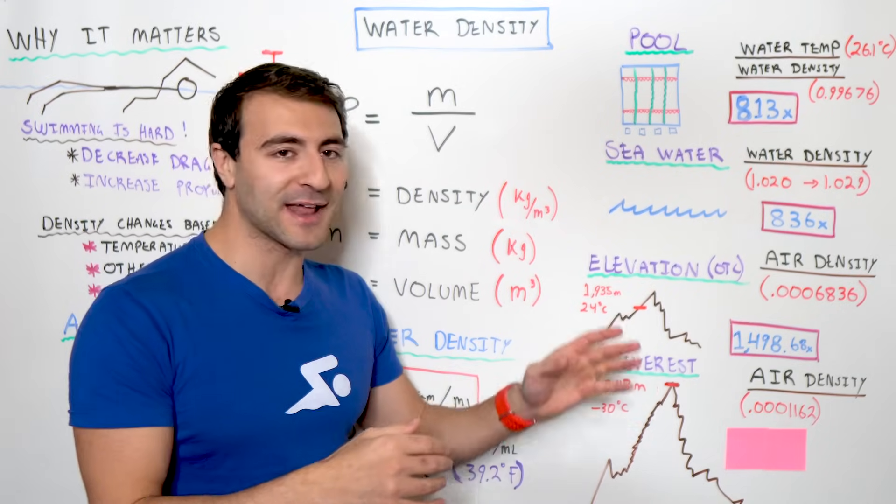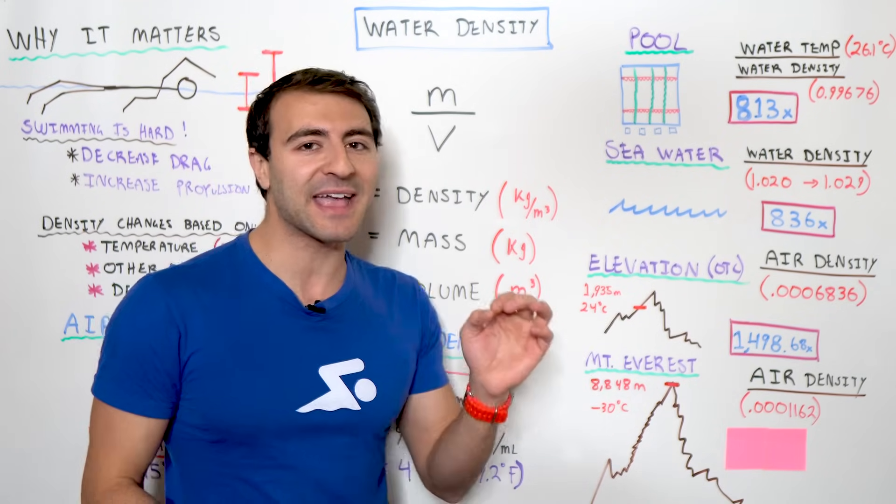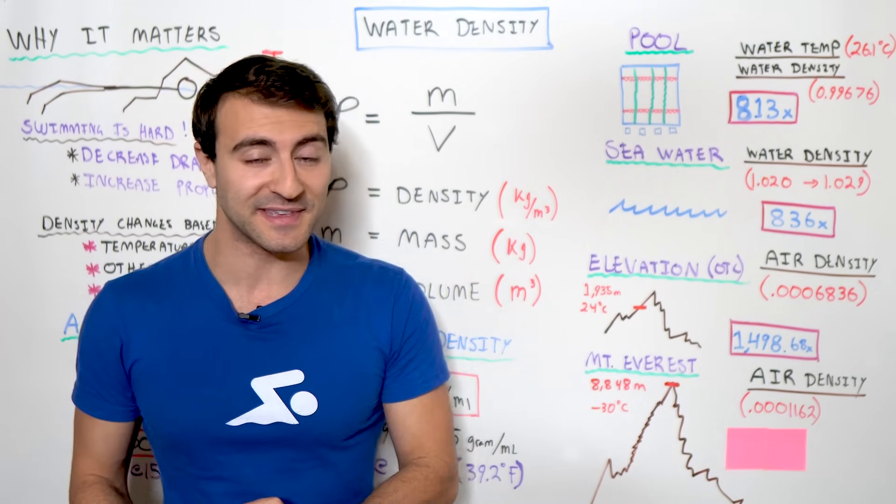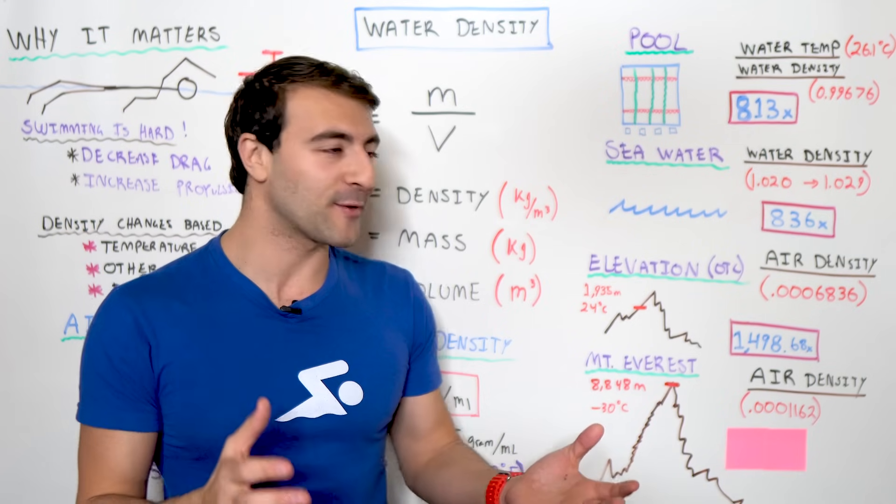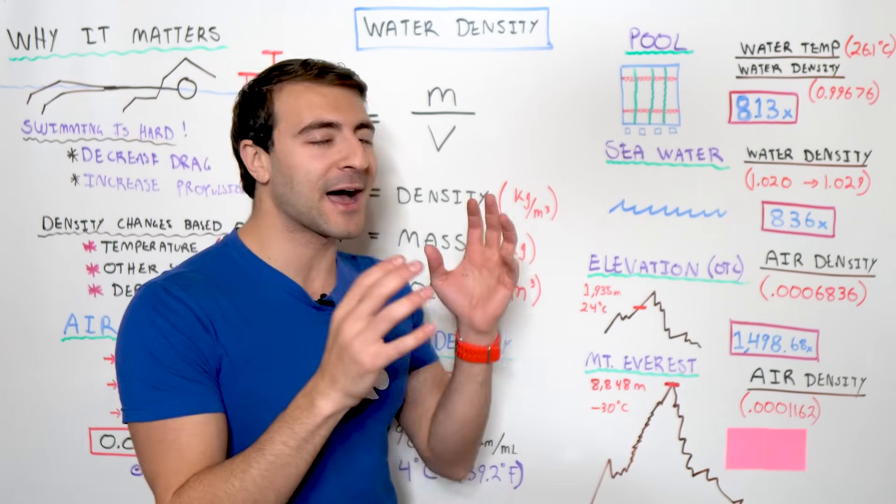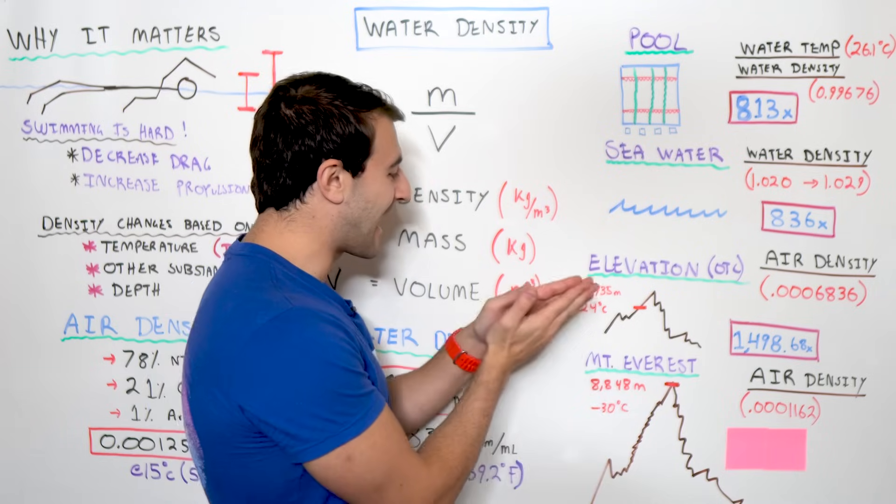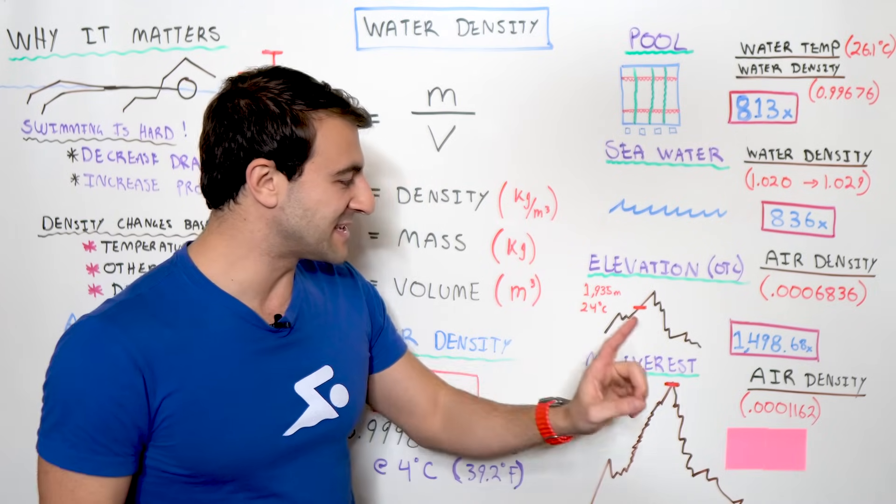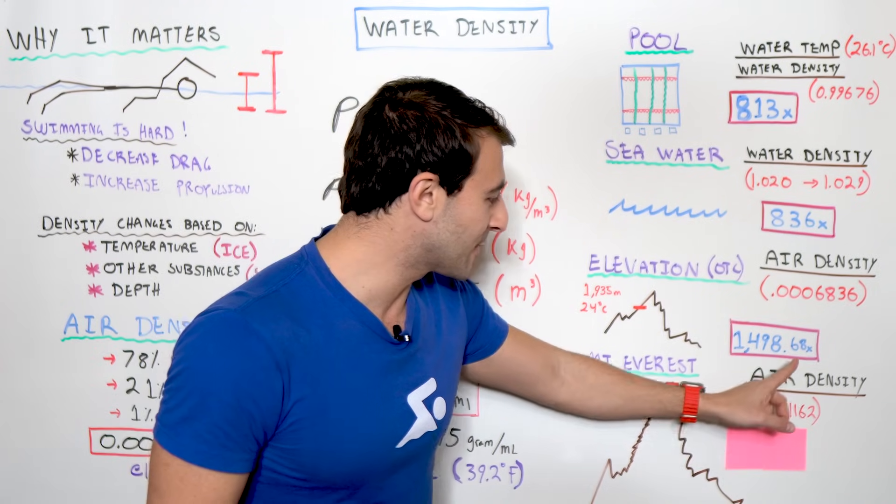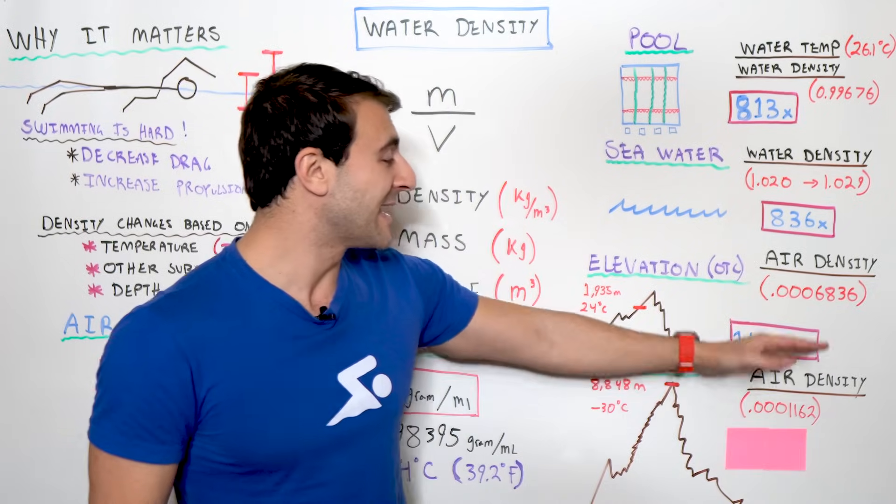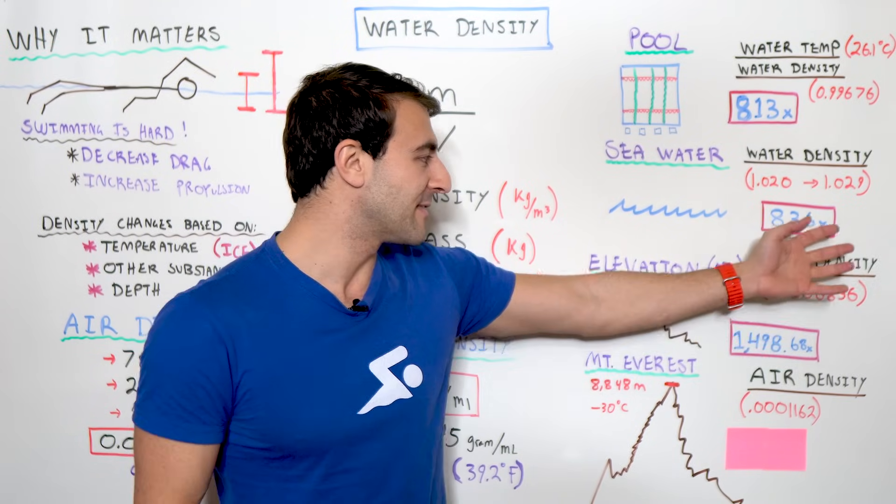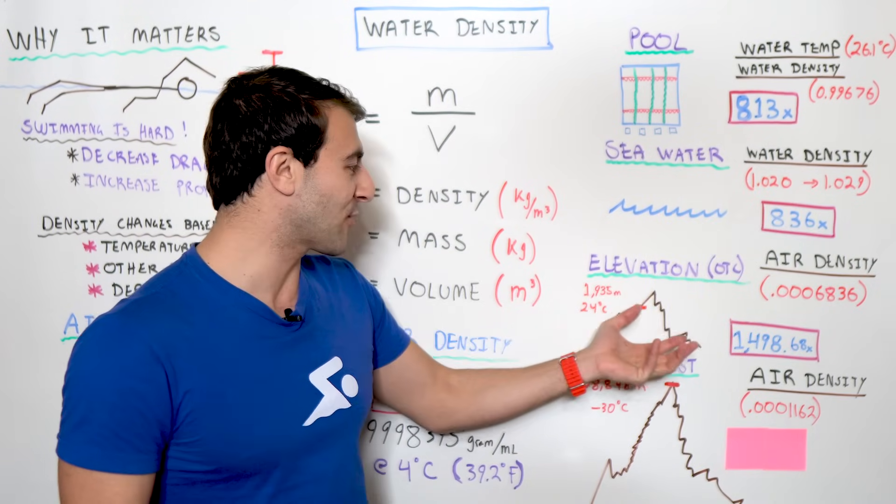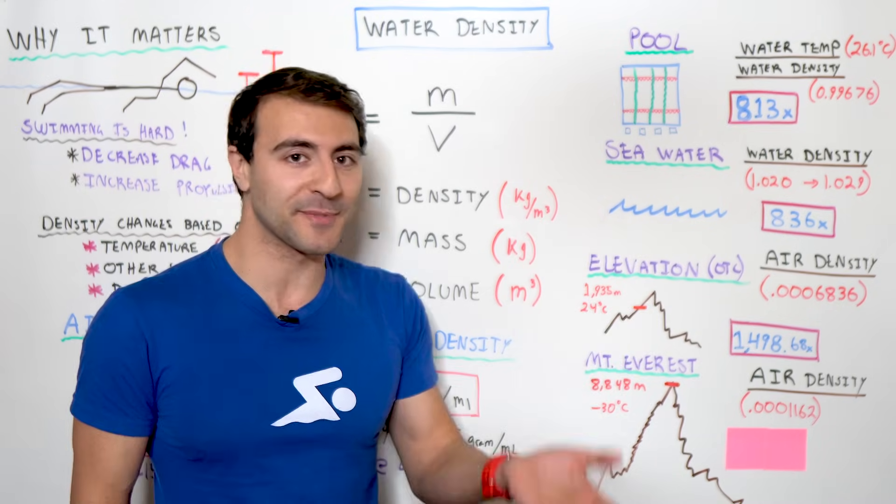And at that altitude, we're not talking about normal temperatures anymore. We got to factor that in for air density. And the temperature is negative 30 degrees Celsius, or about negative 23 degrees Fahrenheit. So, if you were to hypothetically have a swimming pool at that level, the air density is 0.0001162. It's basically like one-fifth the air density at the Olympic Training Center, which is much, much lower, but still pretty high.